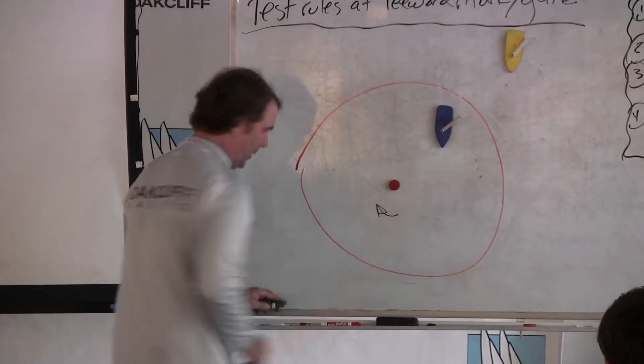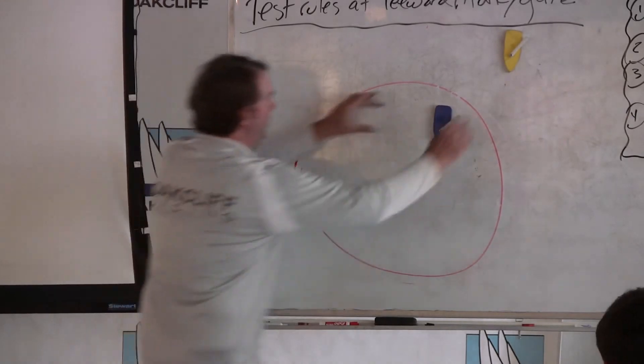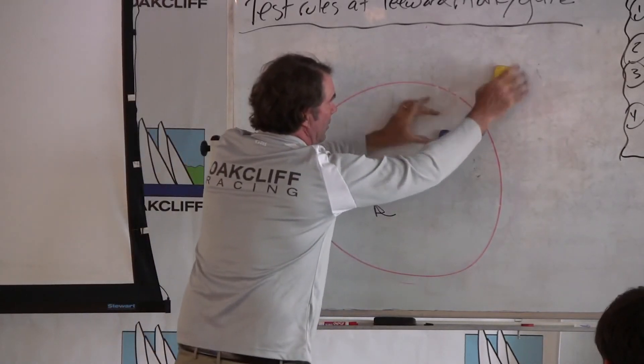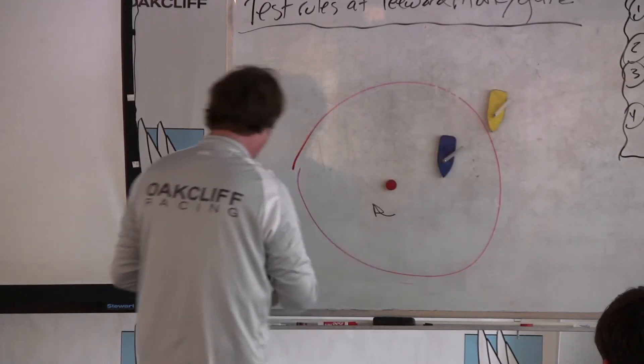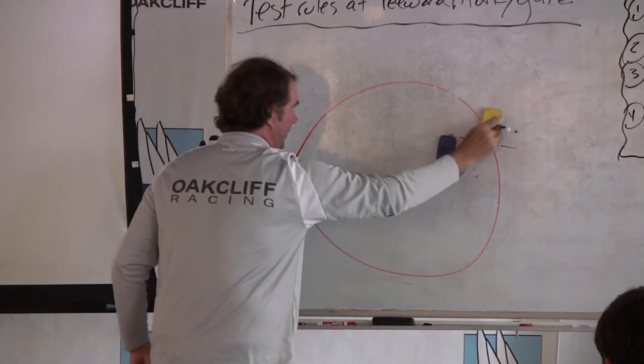As she's dropping her spinnaker, yellow comes in and establishes an overlap from astern. Blue's going slow, and yellow comes in.